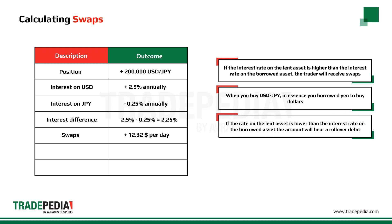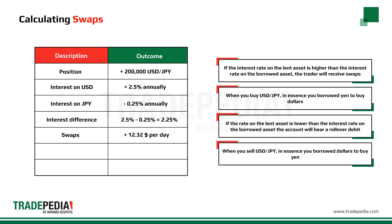If the rate on the lent asset is lower than the interest rate on the borrowed asset, the account will bear a rollover debit. When you sell US dollar against Japanese yen, in essence you borrowed dollars to buy yen. If we consider a short position of $200,000 against Japanese yen, the trader will pay $12.32 every day.